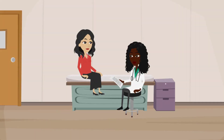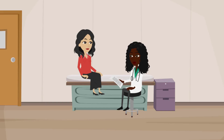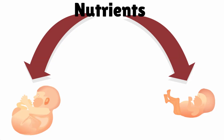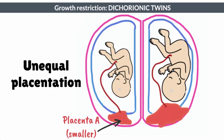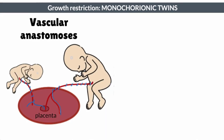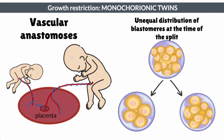You counsel Molly on complications that can occur with multiple gestation pregnancies. Growth restriction results from unequal distribution of nutrients, either from unequal placentation in the case of dichorionic twins, or vascular anastomoses of shared placental vessels in monochorionic twins. There may also be unequal distribution of blastomeres in monochorionic twins.